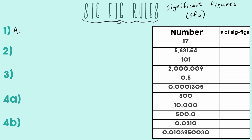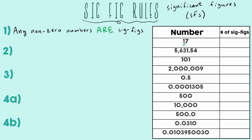Starting with rule number one: any non-zero numbers are SIGFIGs. This takes care of most of your numbers — one through nine. Anytime you see anything that's not a zero, that is a SIGFIG. So for the number 17, our two digits are one and seven. Neither of those are zeros, which means both of them are SIGFIGs, so the total number of SIGFIGs is two.